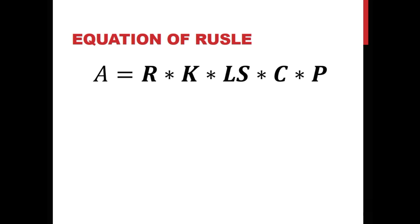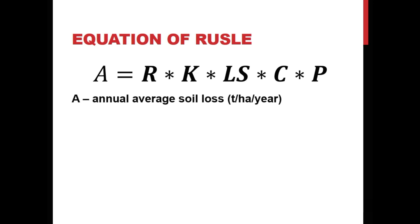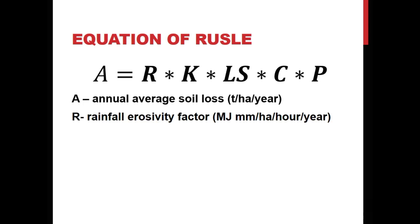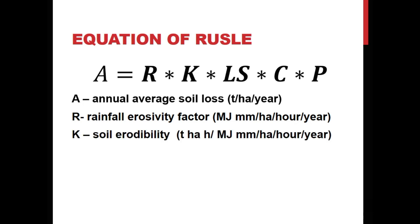The RUSLE equation: A indicates the value of soil erosion or soil loss and consists of five factors. A is annual average soil loss measured in tons per hectare per year. R is a rainfall erosivity factor measured in megajoules millimeters per hectare per hour per year. K is a soil erodability factor — the value of soil loss in tons for a certain area relative to the rainfall erosivity factor.